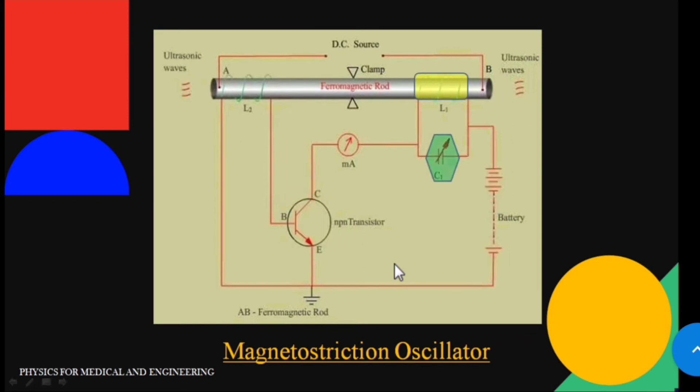The coil L1 wound on the right side of the rod along with the variable capacitor C is in the collector circuit of the NPN transistor. Coil L1 and variable capacitor C form a resonant circuit which is also known as the tank circuit. The frequency of the oscillation is controlled by the variable capacitor C. This is the construction part of the magnetostriction oscillator.